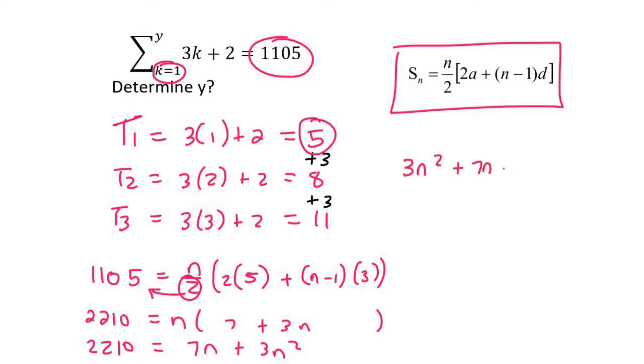Then you can use the quadratic formula, and you'll get that n would equal to 26, or n would be equal to negative 28.33. But now you can't have a negative n value, so this one will be no solution.